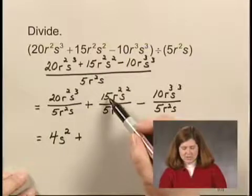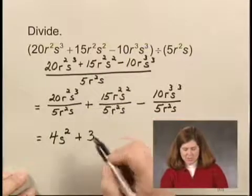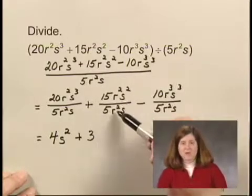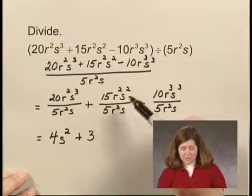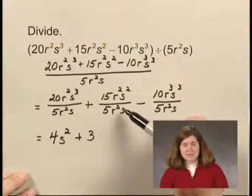Plus 15 divided by 5 is 3. r squared over r squared is, again, 1. s squared over s is s.